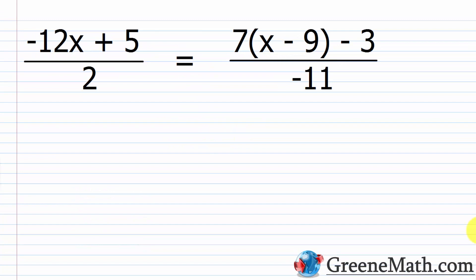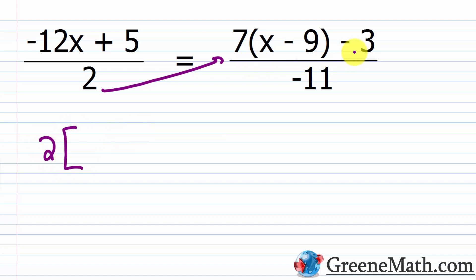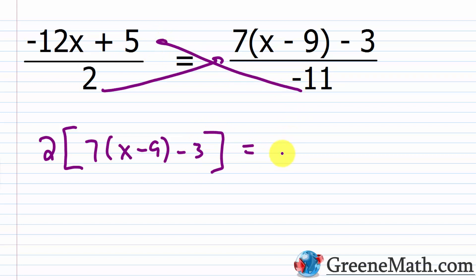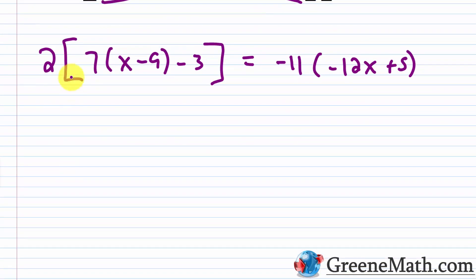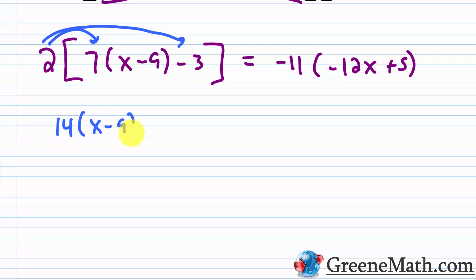Now one more: (-12x+5)/2 = [7(x-9) - 3]/(-11). Cross-multiplying, 2 multiplies the entire numerator [7(x-9) - 3], and -11 multiplies (-12x+5). Simplifying: 2 times 7(x-9) is 14(x-9), minus 2 times 3 is 6. On the right: -11 times -12x is 132x, and -11 times 5 is -55.